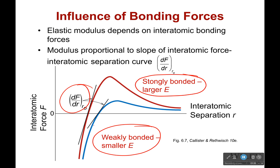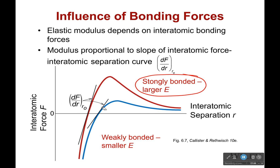Something that is weakly bonded has a smaller modulus of elasticity. Where it takes less force to cause a large deformation, they're not strongly bonded and so we can stretch it a lot more easily.